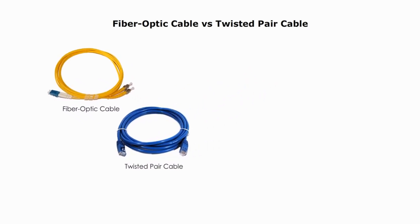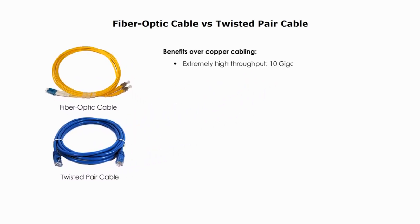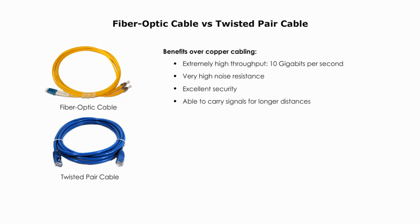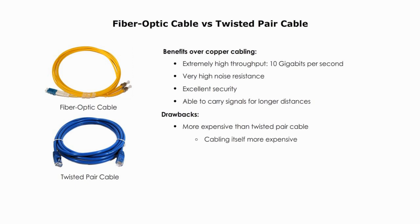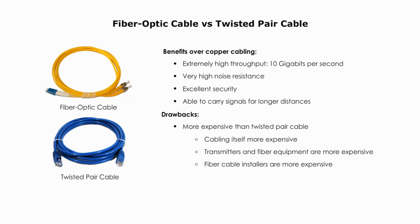Now let's compare the fiber cable with the twisted pair cable. There are many benefits over copper-based twisted pair cable. They can provide extremely high throughput, like 10 gigabits per second. They are highly noise resistant, offer excellent security, and are able to carry signals for longer distances. Of course, there are some drawbacks. Fiber is more expensive than twisted pair cable. The cabling itself is more expensive. Transmitters and fiber equipment are more expensive, and fiber cable installers are more expensive. Fiber cable also requires special equipment and skills.